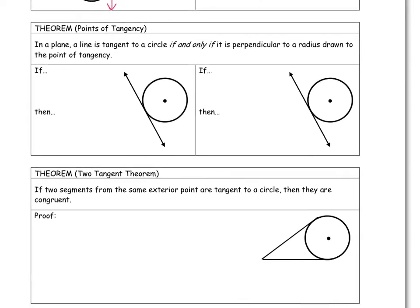So we have a theorem about the points of tangency. In a plane, a line is tangent to a circle if and only if it is perpendicular to a radius drawn to the point of tangency. So when we use the phrase if and only if in math, we mean that the converse is also true for this statement.